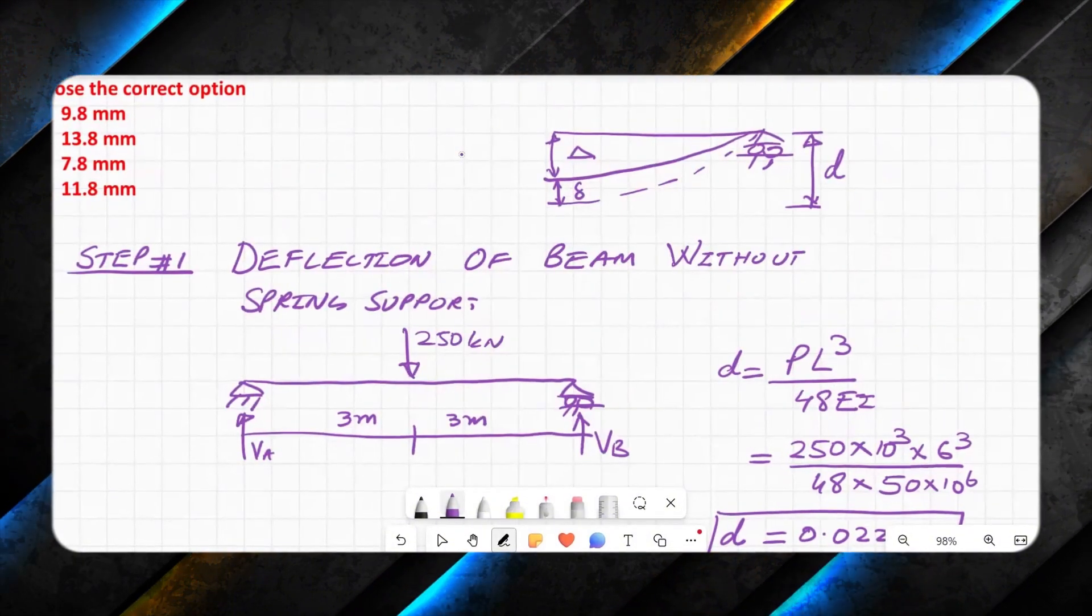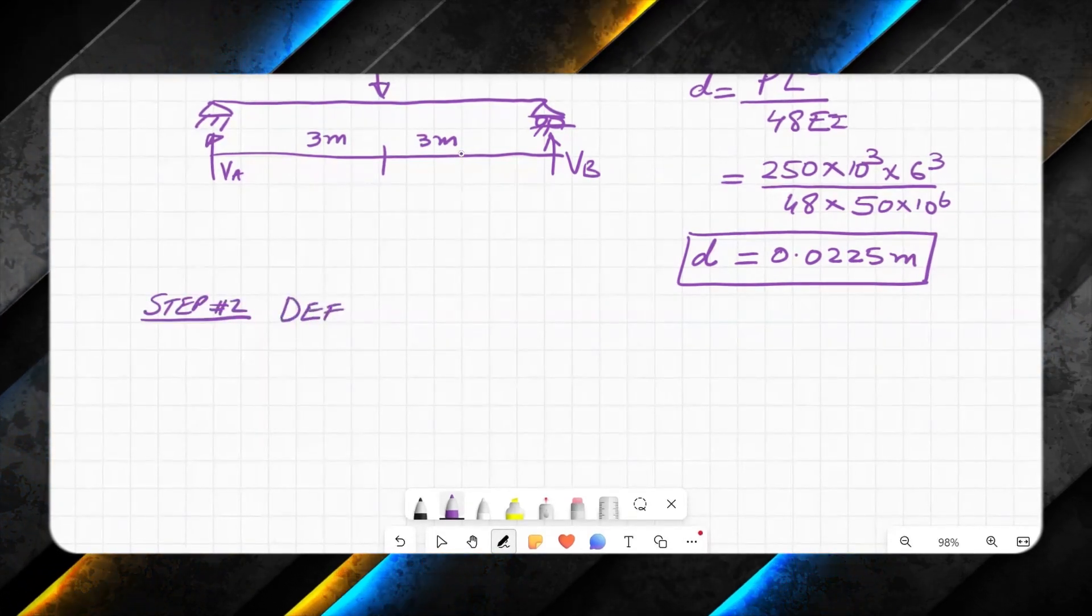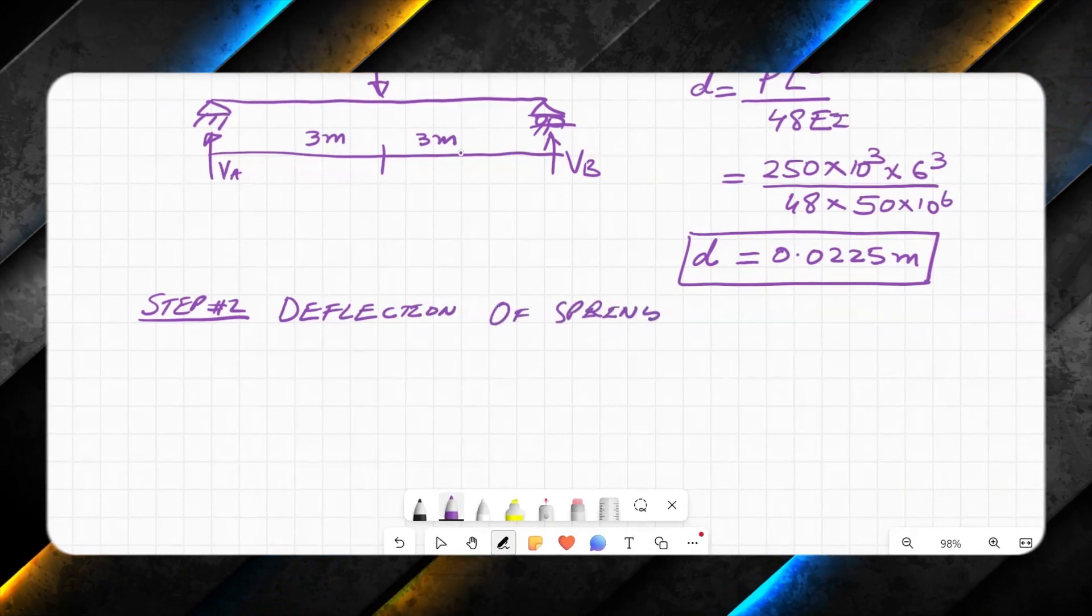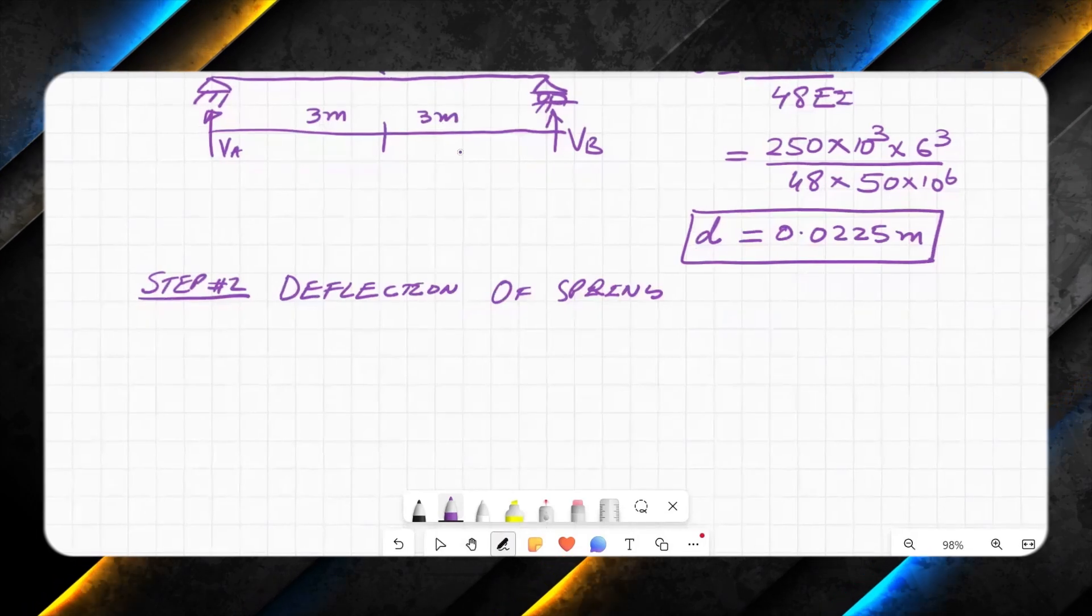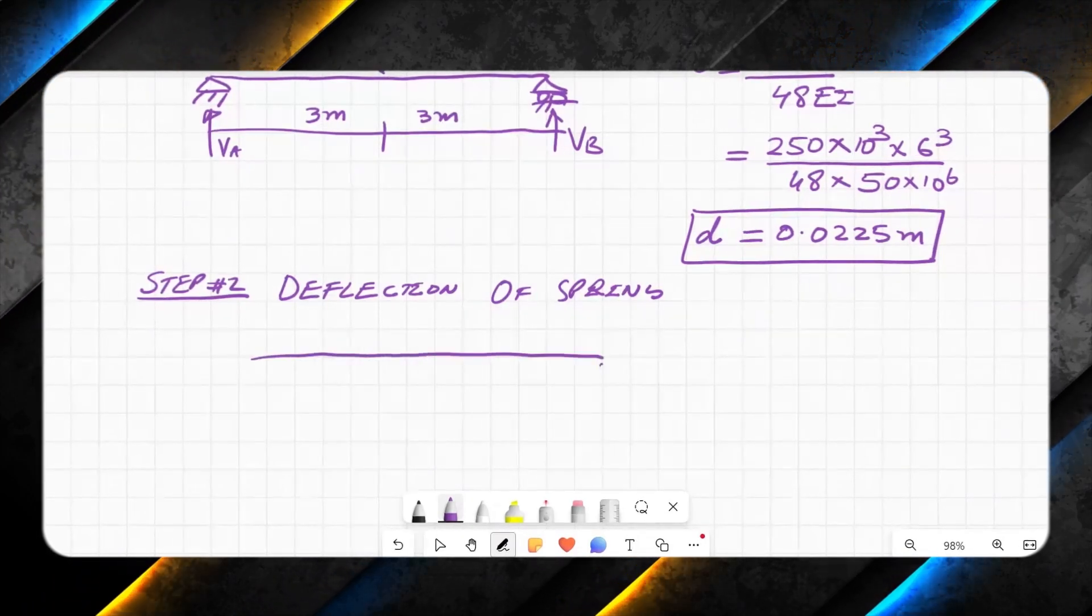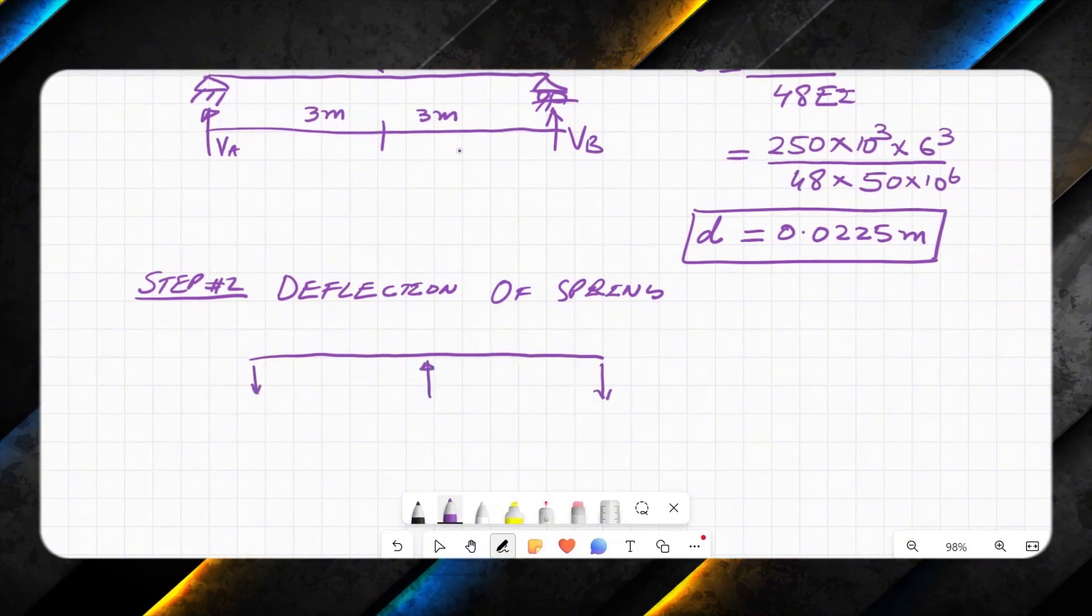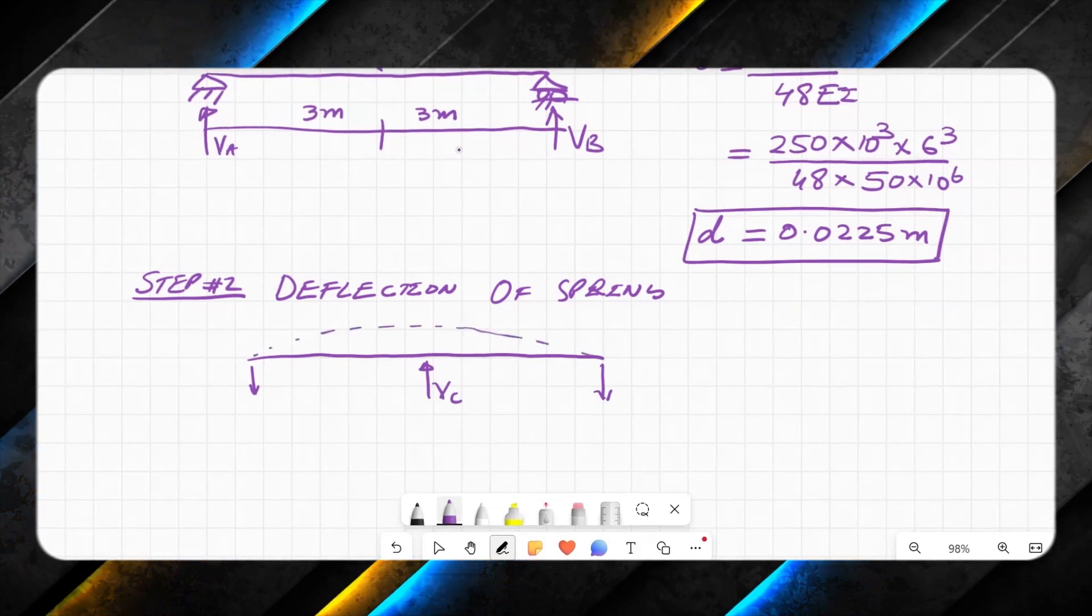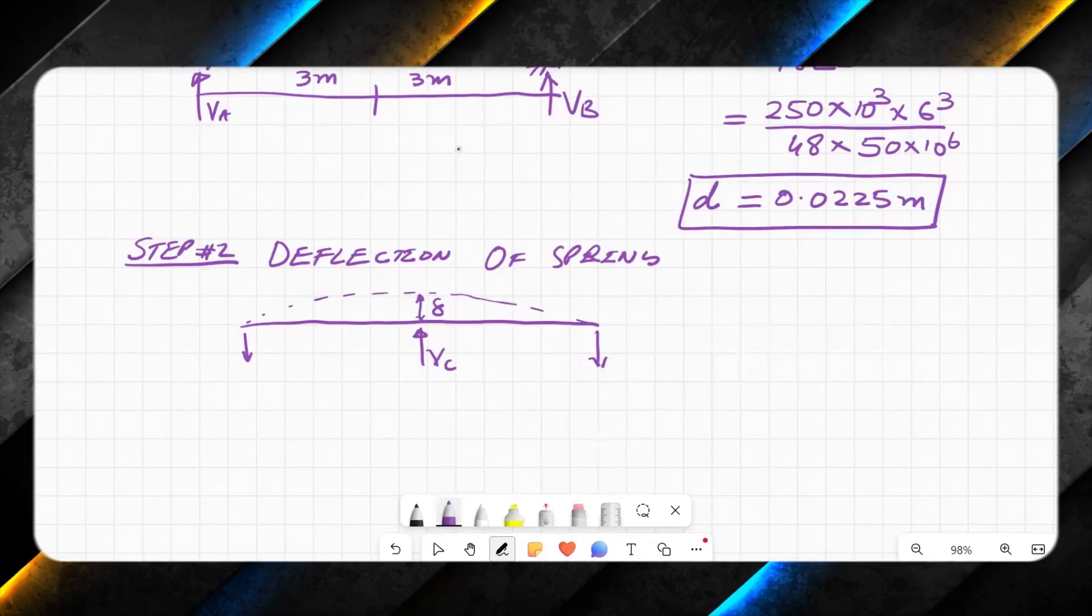Small d I still need to find out the small delta. Step 2 is deflection of spring on its own. So the reaction that will develop due to spring will be like this. At supports, I will have a downward reaction here. At center, I call it as C, it will take the beam upwards.